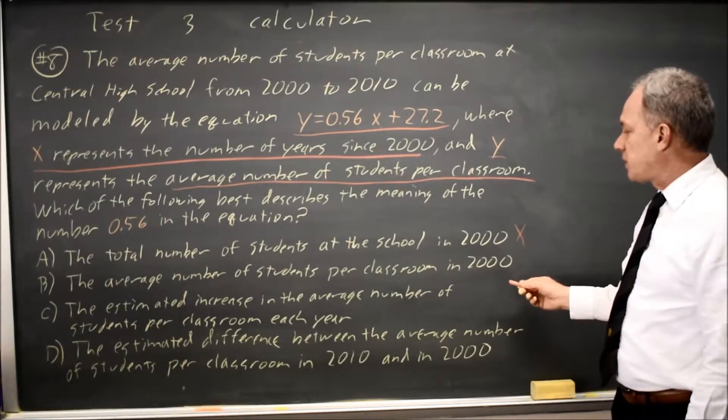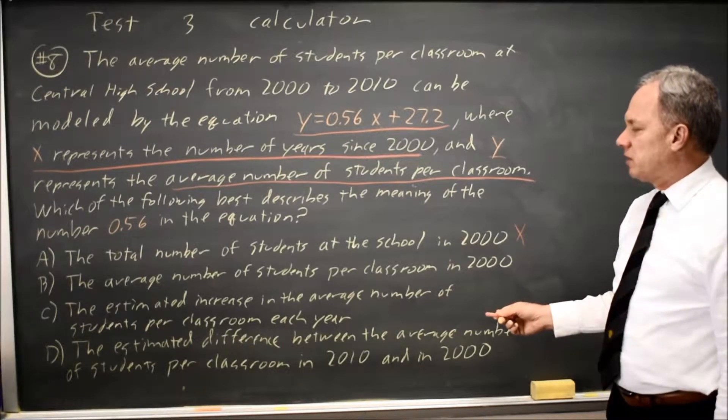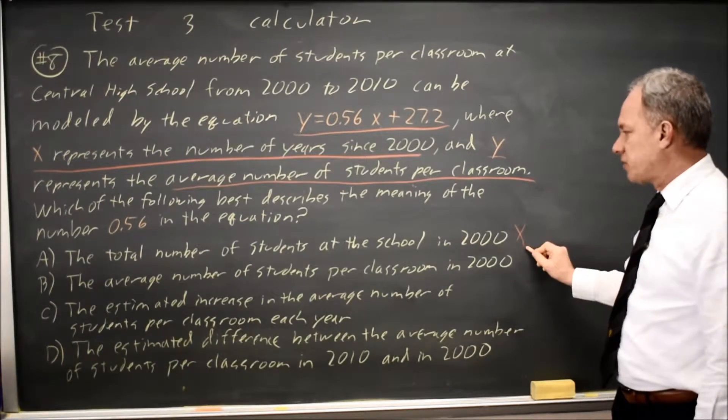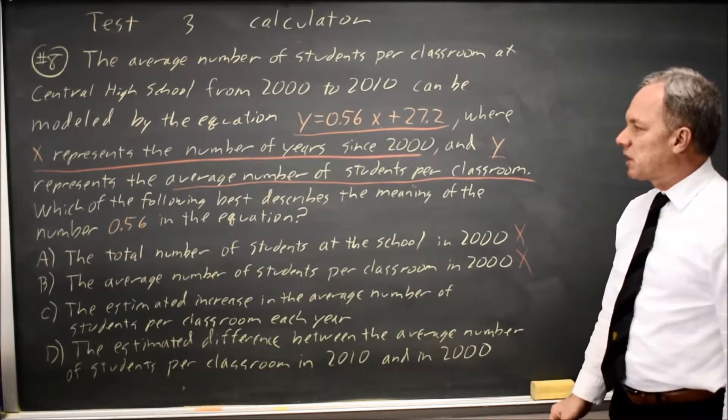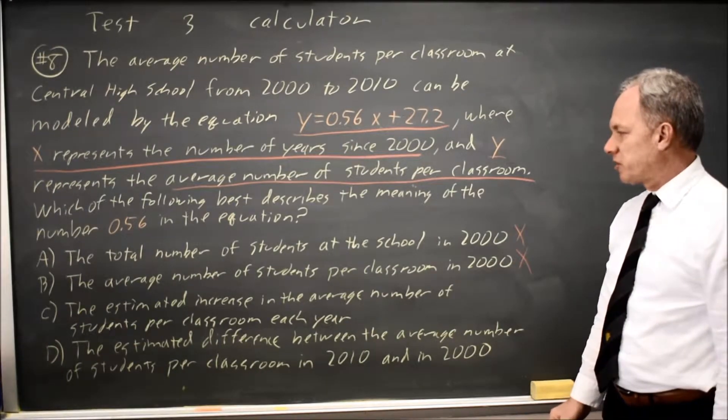Choice B, average number of students per classroom, would be the y value. And the y value is more than 27, so this is not the average number of students per classroom. A classroom with 0.56 students in the classroom would not be fun to teach.